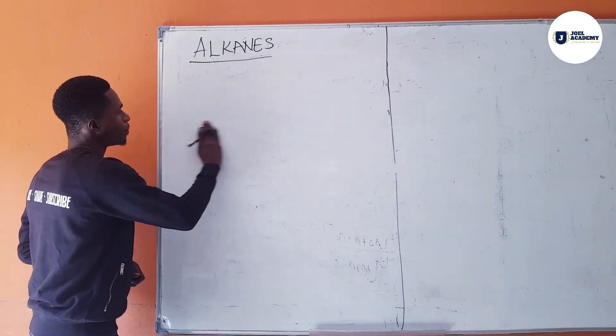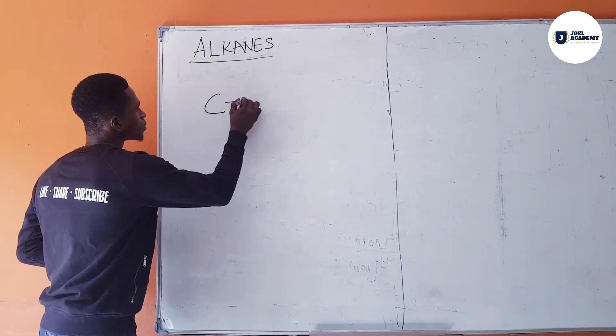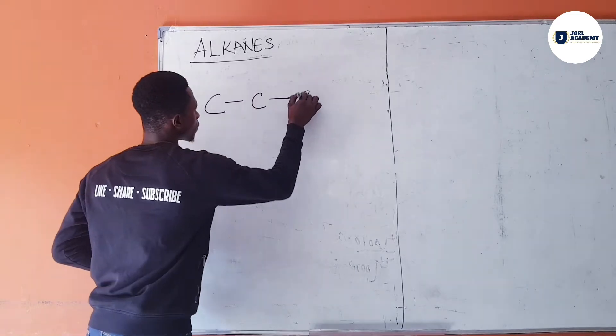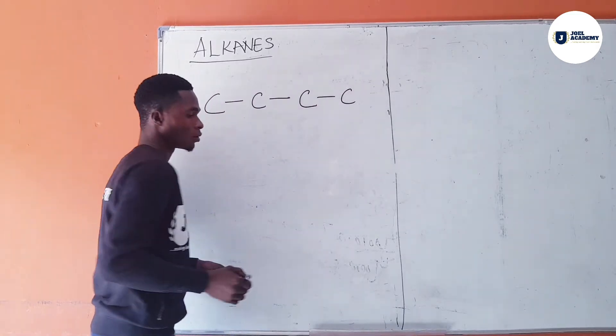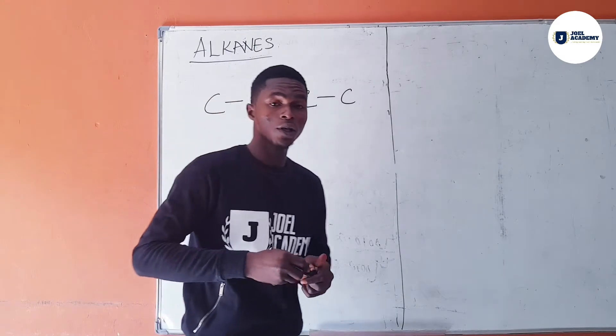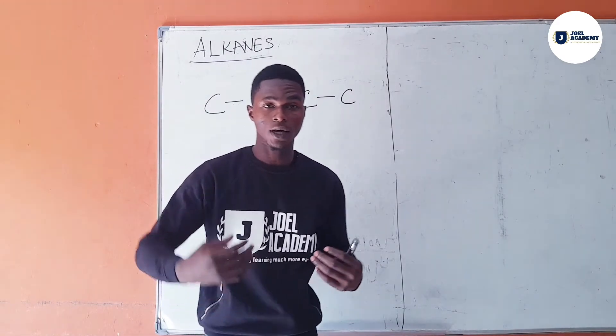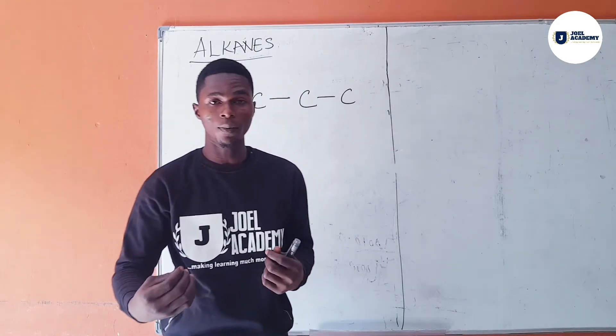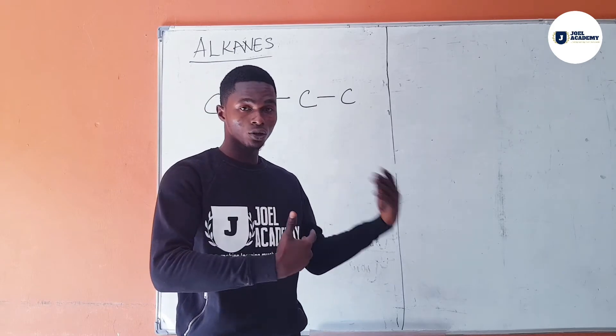Hydrocarbons can exist in this form by connection of chain. Carbon is one of the elements in the periodic table that can catenate. What is catenation? Catenation is simply the ability to form chain with each other.